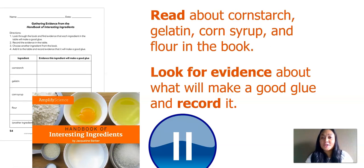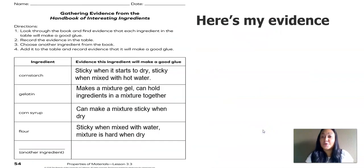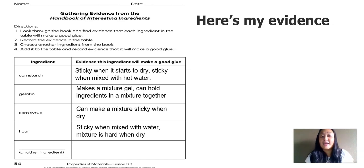Now it's your turn. Remember, you're going to read about cornstarch, gelatin, corn syrup, and flour in the book, and you're looking for evidence about what will make a good glue and record it. So this will be a good time to pause your video. Here's my evidence: for cornstarch — sticky when it starts to dry, sticky when mixed with hot water. Gelatin — makes a mixture gel, can hold ingredients in the mixture together. Corn syrup — can make the mixture sticky when dry. And flour — sticky when mixed with water, mixture is hard when dry.